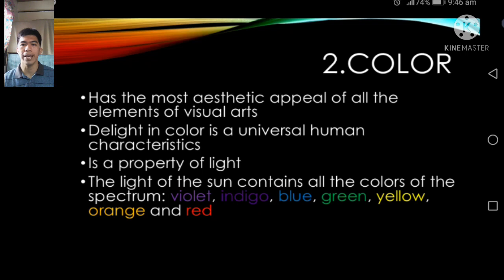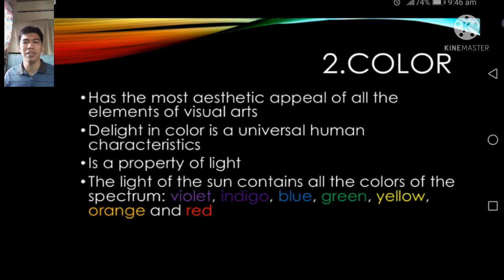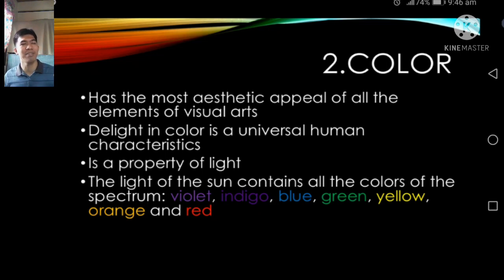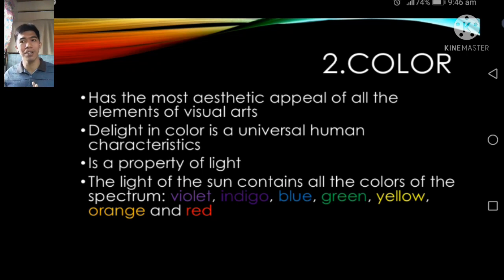Color has the most aesthetic appeal of all the elements of visual arts. The delight in color is a universal human characteristic. Color is a property of light — it can range from light to dark. The light of the sun contains all the colors of the spectrum: violet, indigo, blue, green, yellow, orange, and red.